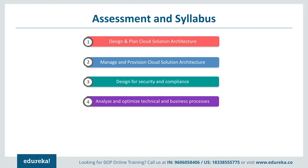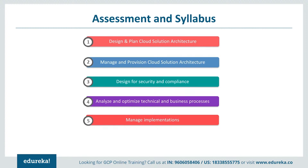Section 4 covers analyzing and optimizing technical as well as business processes. It includes software development lifecycle planning, continuous integration and continuous deployment, troubleshooting and post-mortem analysis, testing and validation, IT enterprise processes, stakeholder management, change management, and decision-making processes.